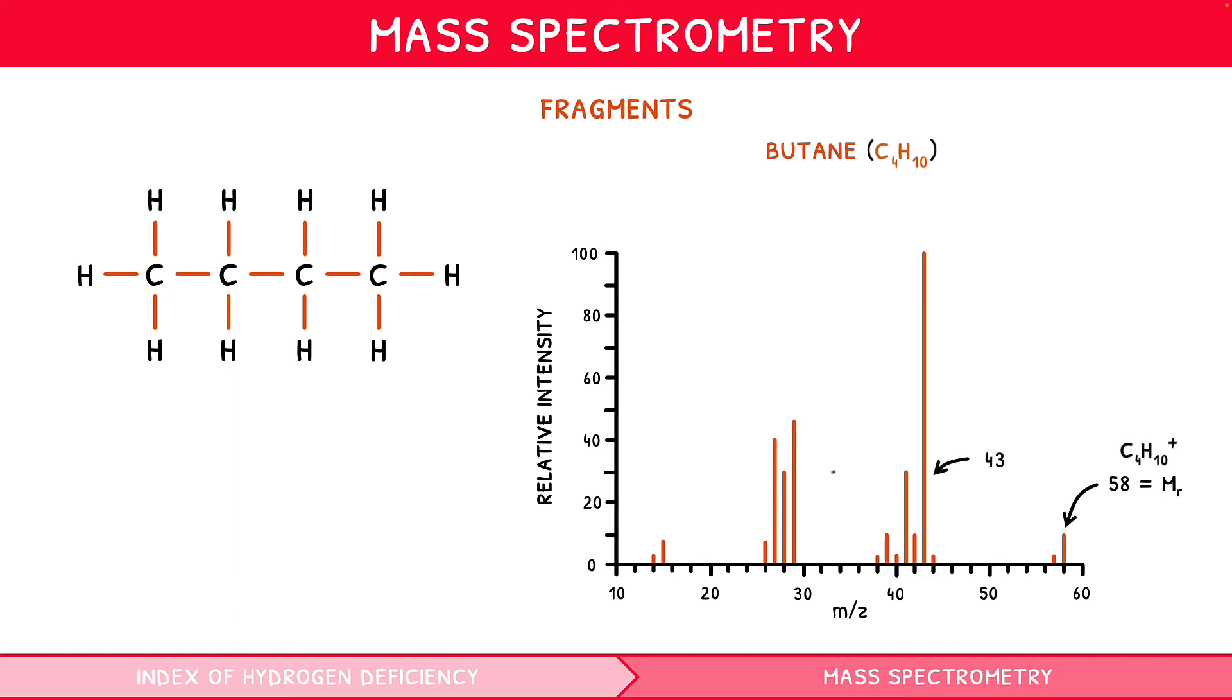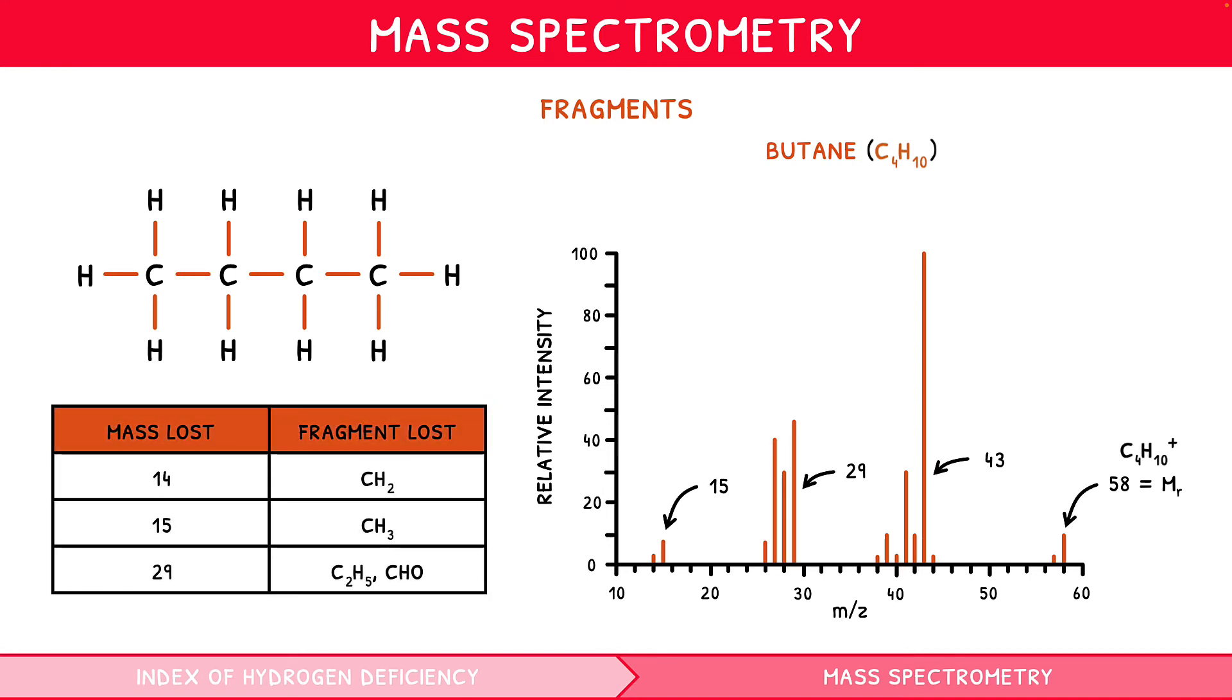There are also peaks at 43, 29 and 15. Looking at our table, and knowing butane contains no oxygen, we can see the peak at 29 would likely represent C2H5 plus and at 15 CH3 plus. To identify the fragment giving rise to the peak at 43, we can consider the gaps between peaks. From the M plus peak at 58 to 43, we have lost a mass of 15, i.e. a CH3. Therefore, the peak at 43 is represented by the overall molecule having lost a CH3 group, and so it represents C3H7 plus.